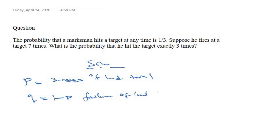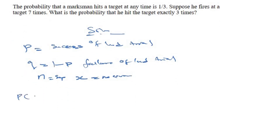We have n, which is the total number of trials — the total sample space. And x is the number of events. This is a binomial distribution and it has a formula: the probability of X equal to x is equal to n combination x, multiplied by p (success) raised to the power of x, multiplied by q (failure) raised to the power of n minus x.